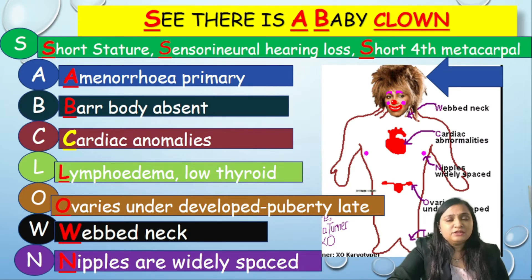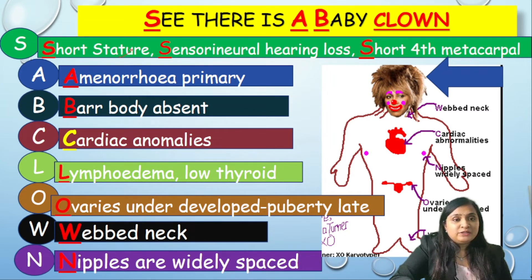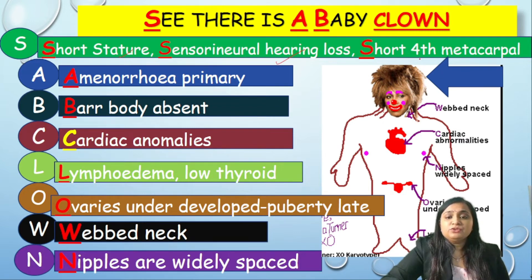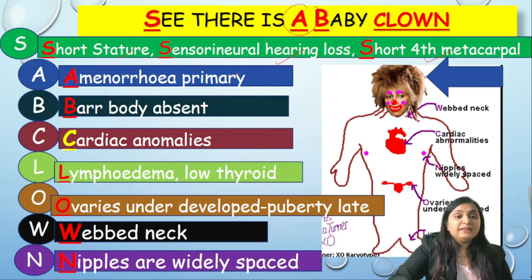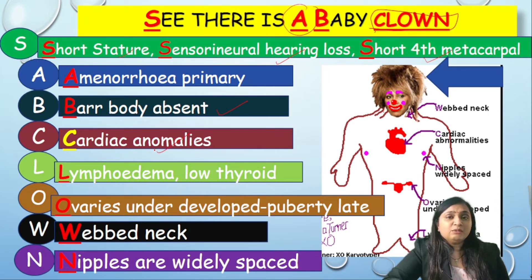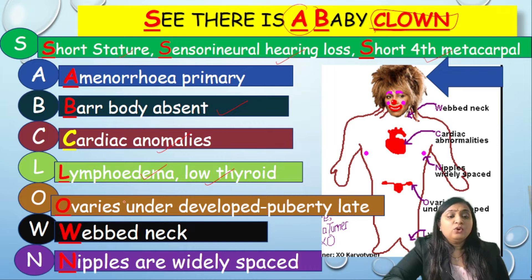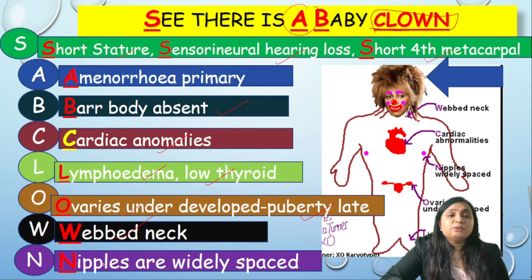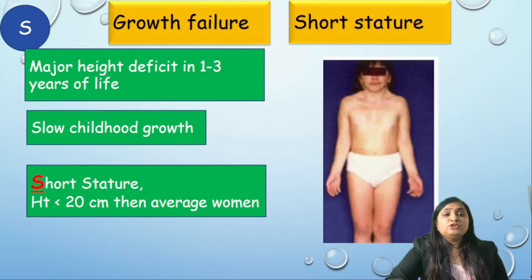Looking at the clinical manifestations of Turner syndrome, a very easy mnemonic is 'Baby Clown': S stands for short stature, sensorineural hearing loss, short fourth metacarpal, and short fourth metatarsal. A stands for primary amenorrhea. B stands for Barr body absent. In 'Clown': C is for cardiac anomalies, L stands for lymphedema and low thyroid hormone, O stands for ovaries underdeveloped causing late puberty, W stands for webbed neck and widely spaced nipples, N stands for nipples widely spaced.